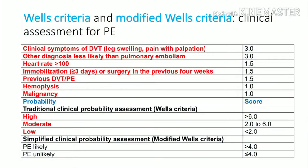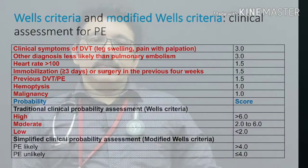Once pulmonary embolism is suspected, score the patient using Wells criteria or modified Wells criteria. Under Wells criteria there are three categories: high (score more than 6), moderate (2 to 6), and low (less than 2). The modified Wells criteria has two categories: PE likely (score more than 4) or PE unlikely (less than 4).